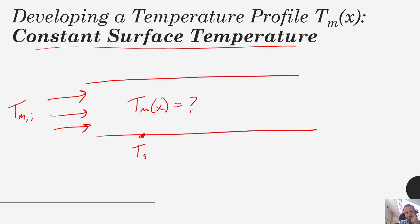So if it's coming in, if we were to plot this versus X, it's going to come in at T mean inlet, and let's say our surface temperature is this higher temperature. Let's say this is a heating condition. We would expect eventually this fluid to get very close to the surface temperature. Eventually toward the end of the pipe we'd expect it to be close to there.